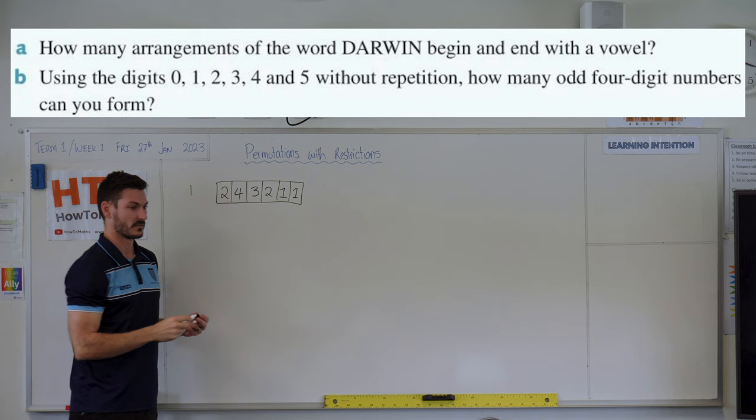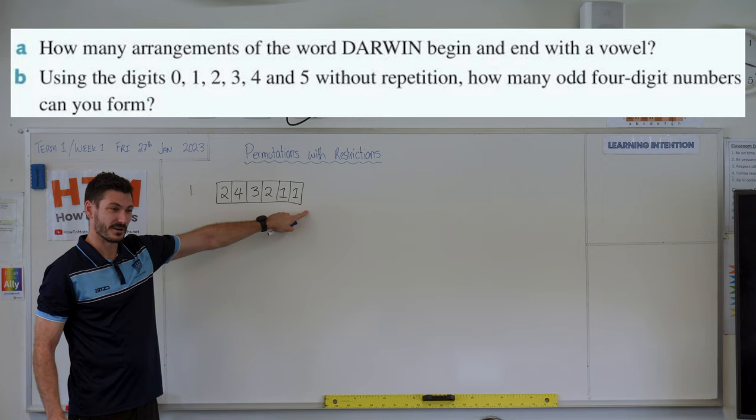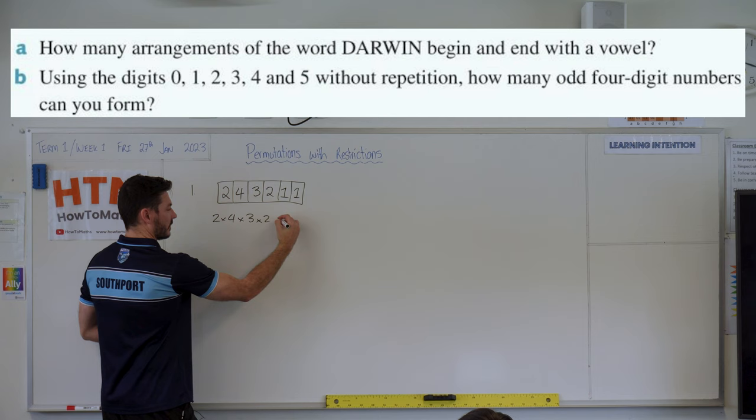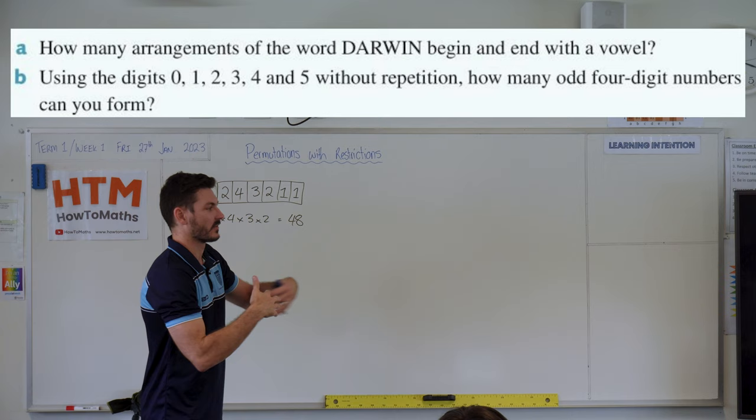So once you've got this set up, you just multiply them through. So we've got two fours are eight, three eights are 24, double that's 48. Timesing by one is irrelevant. So we end up getting 2 times 4 times 3 times 2, which is 48, if my math was correct. 48 ways to arrange Darwin. First restriction is stuff in particular spots. You put them in first and then fill out the rest.